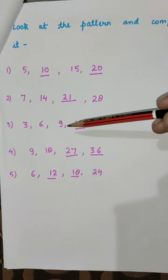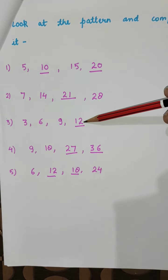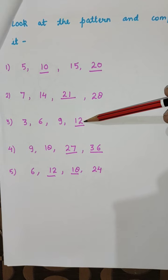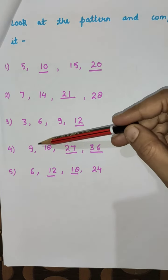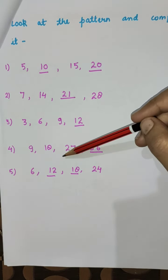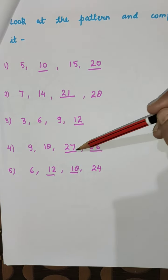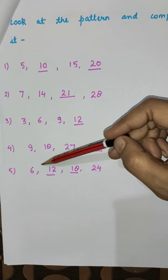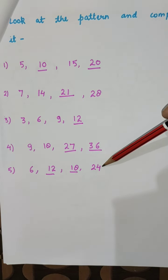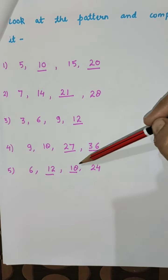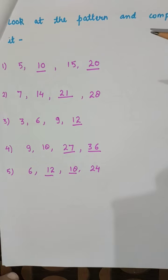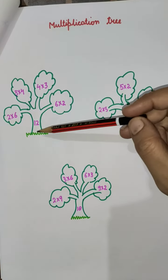3×1 = 3, 3×2 = 6, 3×3 = 9, 3×4 = 12, so 12 is the answer of this pattern. 9×1 = 9, 9×2 = 18, 9×3 = 27, 9×4 = 36, so 27 is the answer. 6×1 = 6, 6×2 = 12, 6×3 = 18, 6×4 = 24. These two will be the answer of this pattern. Now multiplication tree.